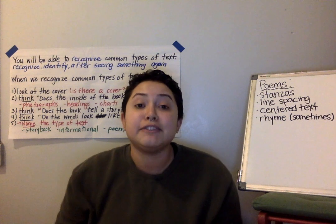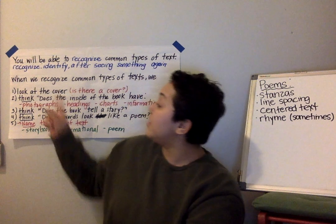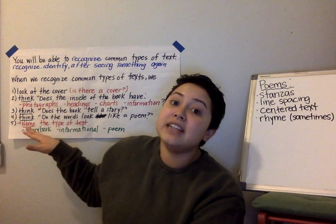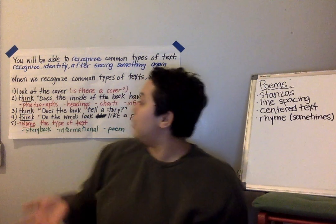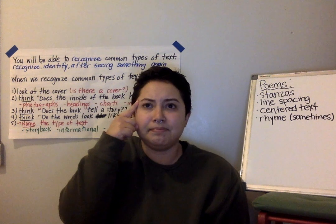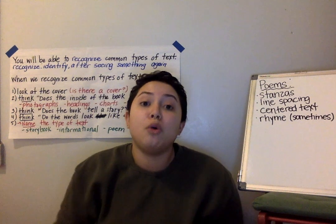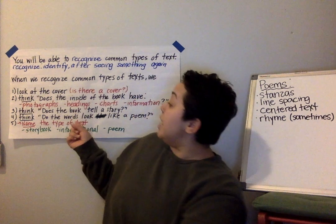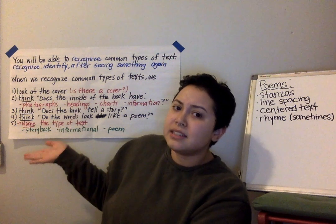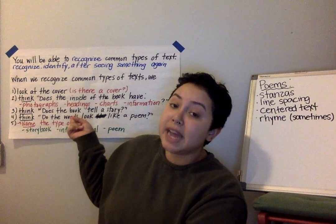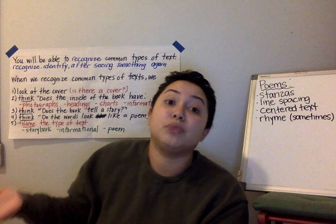An informational text is different from a storybook because the author wants to teach us something, and a lot of the times we have real photographs and stuff like headings — you might see an index. Then we have our storybooks. We think: does it tell a story? We've read so many stories. Now the next thing that we do is we're going to name the type of text. A storybook is different from an informational text because it's something that's not true, and the author wants us to read it for fun.